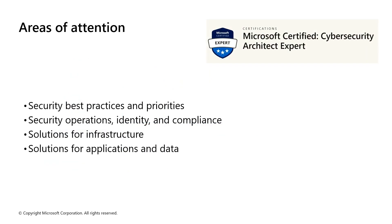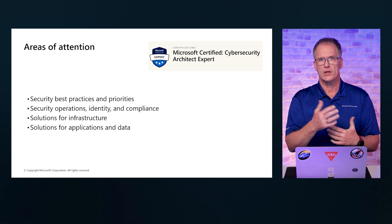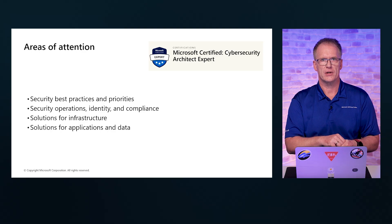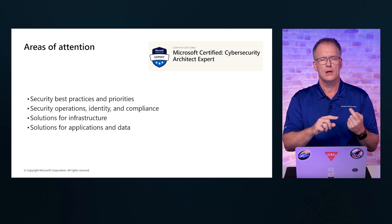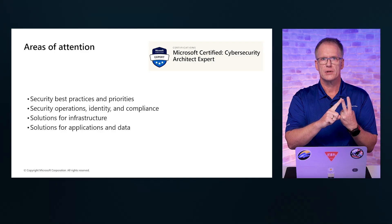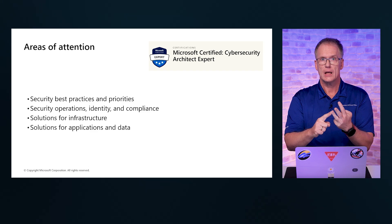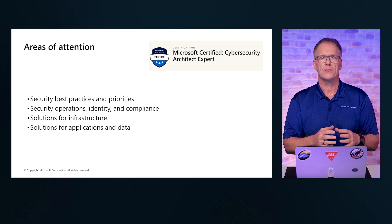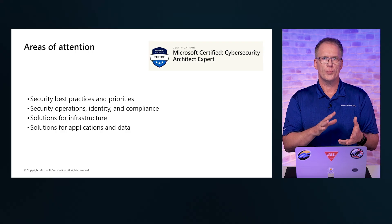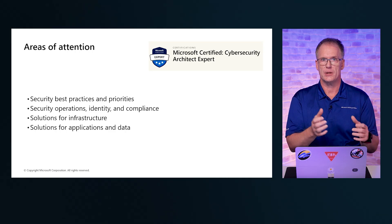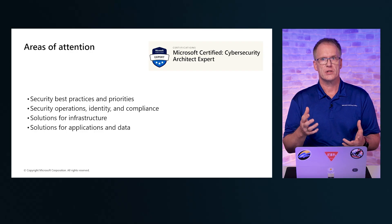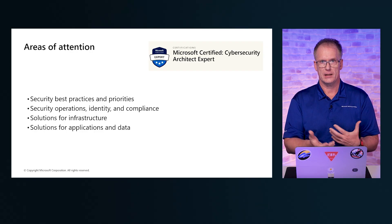The certification, course, and videos are organized around four main areas of expertise expected from a Microsoft cybersecurity architect: security best practices and priorities, security operations, identity and compliance, solutions for infrastructure, and solutions for applications and data. We will have videos on topics within each of these areas. As you can imagine, these areas are not strict boundaries. The first one listed is about best practices that will be relevant always and everywhere, so we will see them again and again.